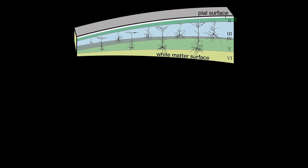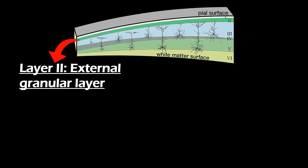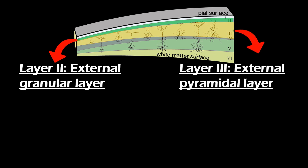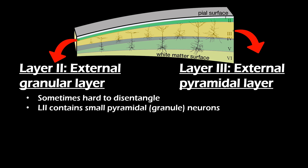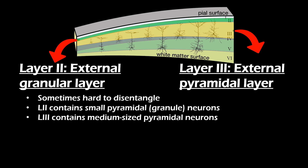The second layer, also called the external granular layer, and the third layer, also called the external pyramidal layer, are often categorized together. Although there are some differences between these layers, they are functionally somewhat similar. In some regions, a clear distinction between layer 2 and layer 3 is hard to make. Layer 2 is composed of small pyramidal neurons, also known as granule cells. Layer 3 contains somewhat larger pyramidal neurons.